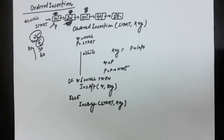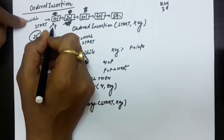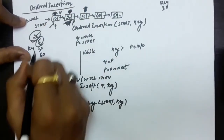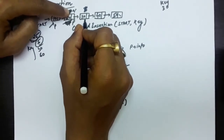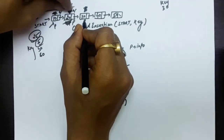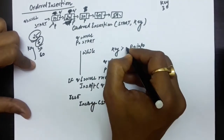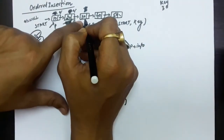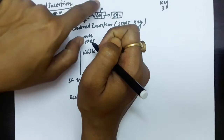Let's take another example — inserting 30. P starts at the first node. 30 is greater than the first node, so P moves forward and Q follows. 30 is greater than the second node too, so P and Q advance again. Now 30 is not greater than the existing 30, but since equal elements must go after the existing one, we must change the condition to key greater than or equal to P dot info, so we advance once more and then insert after Q.